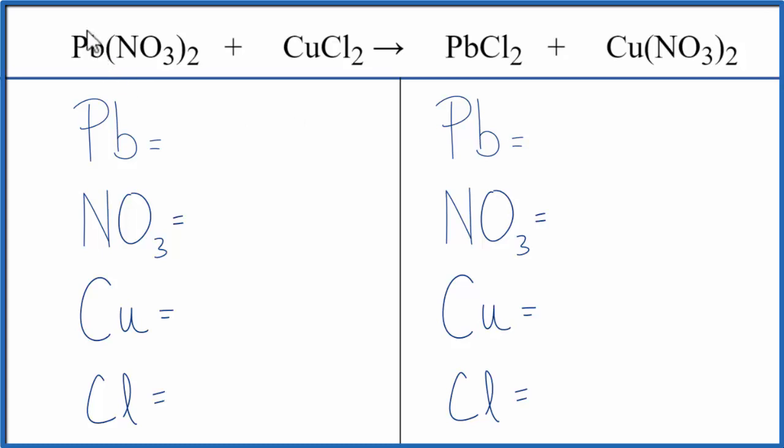Let's count the atoms up on each side of the equation. We have one lead, and this NO₃ stays together as the nitrate ion, so we have one nitrate times two, giving us two of those. One copper and two chlorines.